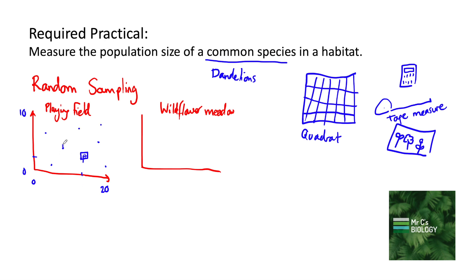At each coordinate we're going to go to that location and place our quadrat. We're going to do the same for the wildflower meadow - we'll work out an area, let's assume the same size for now, and come up with more random coordinates using the random number generator on our calculator. At each one we're going to place our quadrat and carry out our experiment.